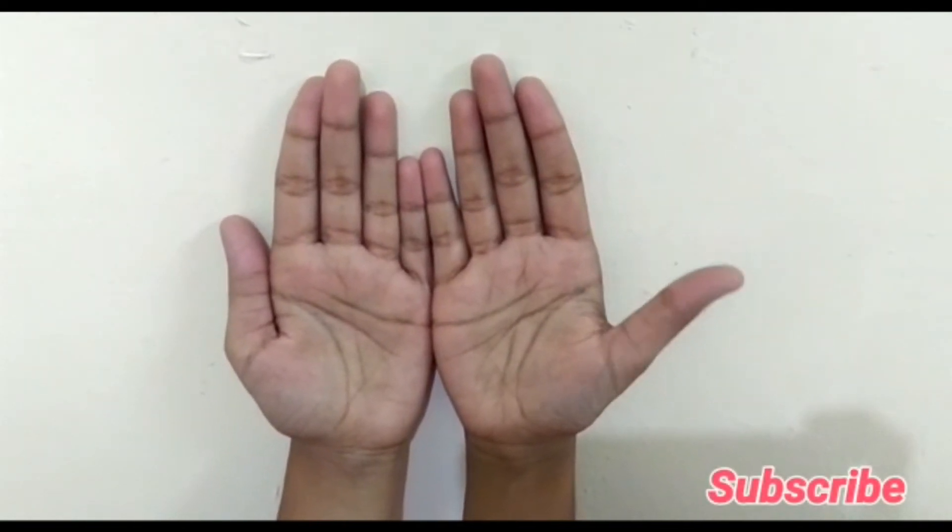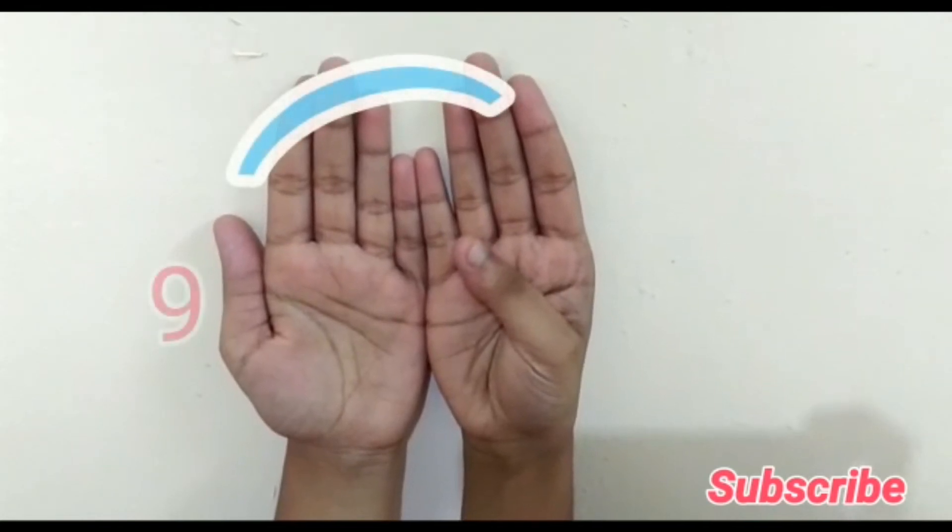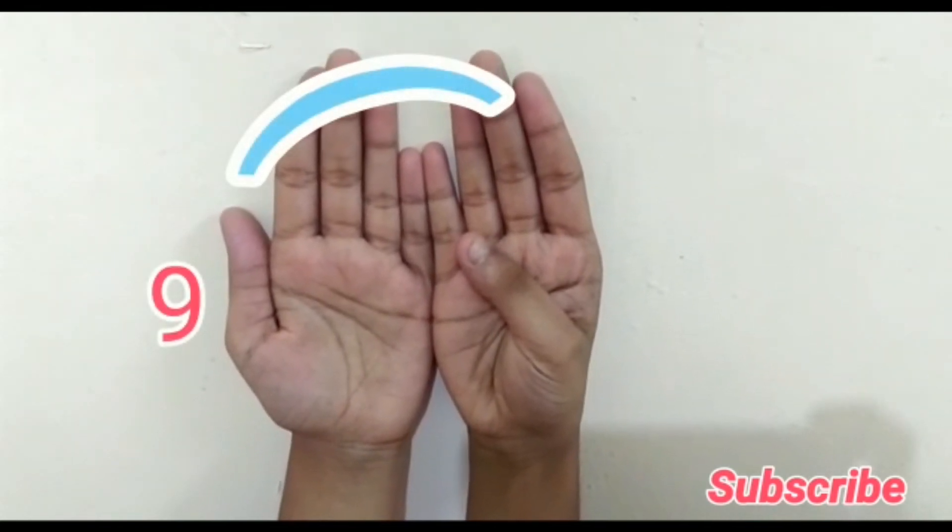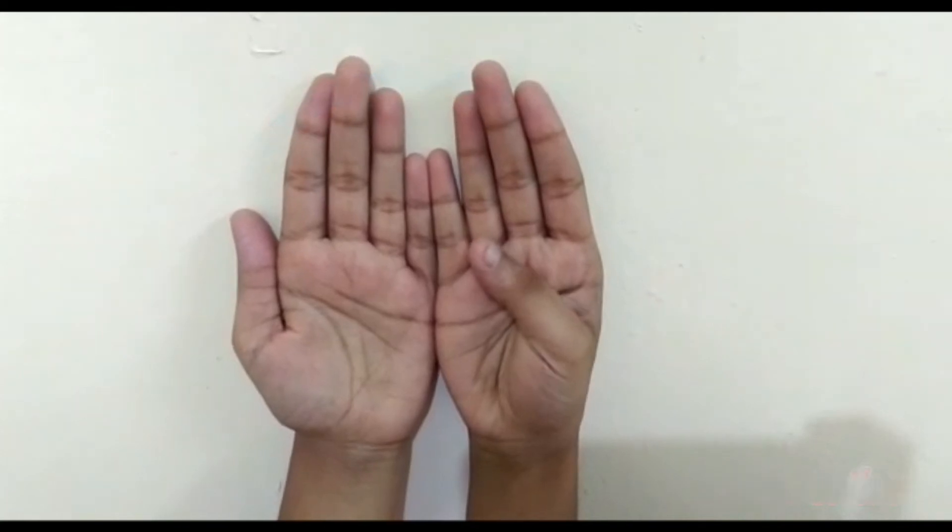10 into 9. So fold your tenth finger. Towards the left side of the folded finger it's 9 and towards the right side it's 0. 10 times 9 are 90.